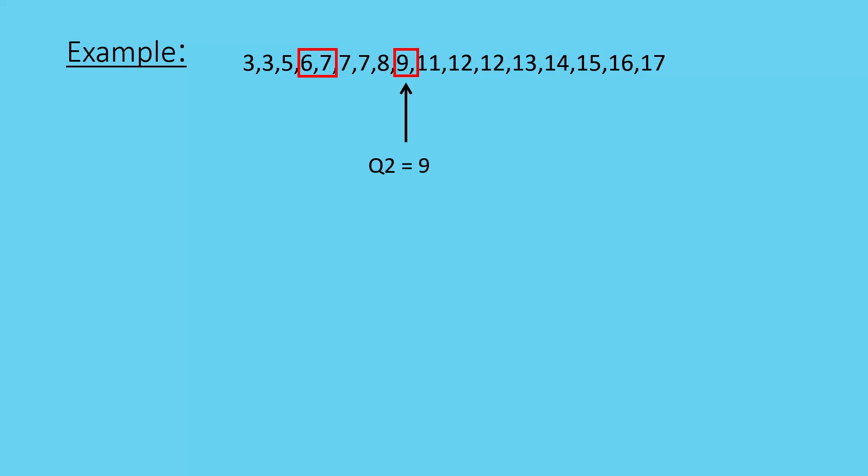You'll notice that on either side of my little red block that I've put in there now, I've got three numbers on either side of those. That means that my quartile number 1 will lie in between the values 6 and 7.